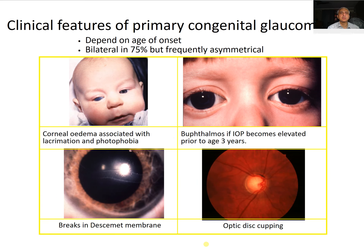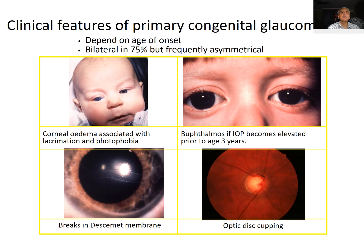The clinical features of congenital glaucoma include corneal edema associated with buphthalmos — where both eyes are larger in size — breaks in Descemet's membrane or Haab's striae, and optic disc cupping. All of these are seen in congenital glaucoma.